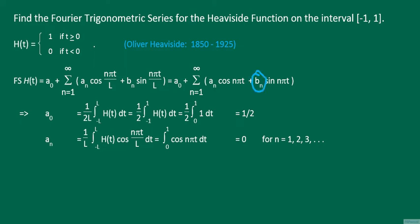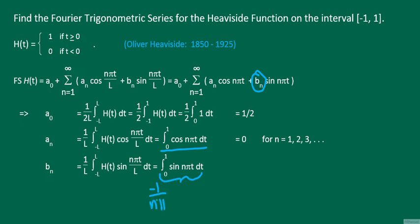We have a similar formula for B sub n. B sub n is equal to 1 over L times the integral from minus L to L of H(t) times sine(nπt/L). Replacing L by 1 and using the definition of the Heaviside function, B sub n reduces to the integral from 0 to 1 of sine(nπt). The antiderivative is minus 1 over nπ times cosine(nπt), evaluated from 0 to 1.